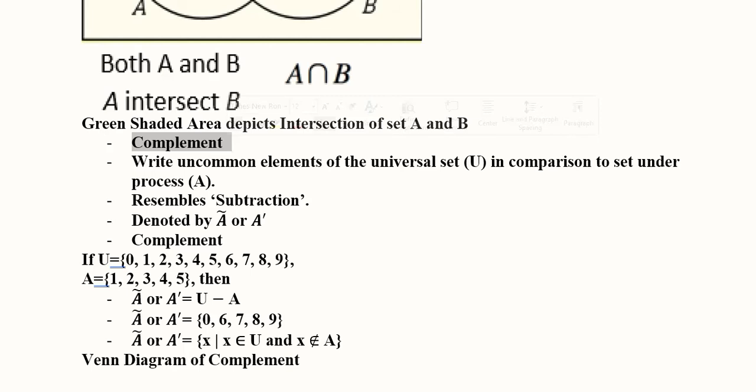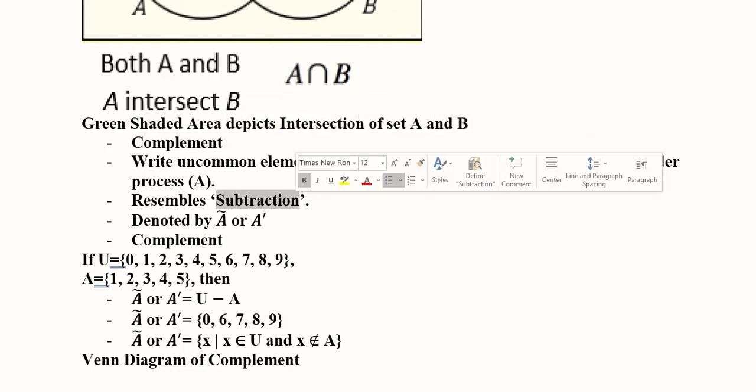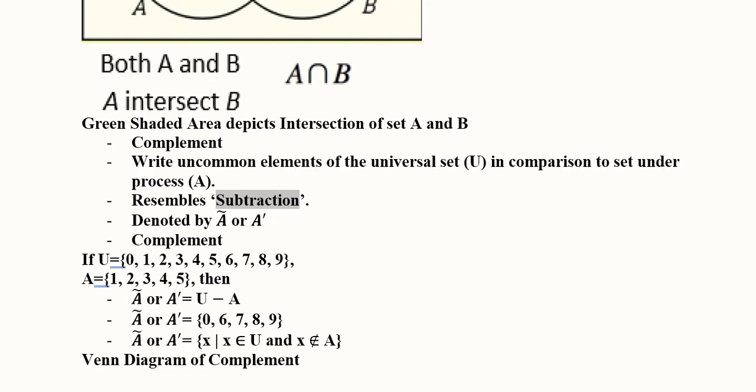The third one is complement and this is simply the difference and it is quite synonymous to subtraction that we do in our algebra. So, we take the larger set which is known as the universal set which contains all of the members of the smaller set and some additional members as well. When we denote the complement of a set, we represent it with this tilde or this prime. So, these are two ways of writing it. Some people write it as A, C where C is in the subscript showing that it is a complement.